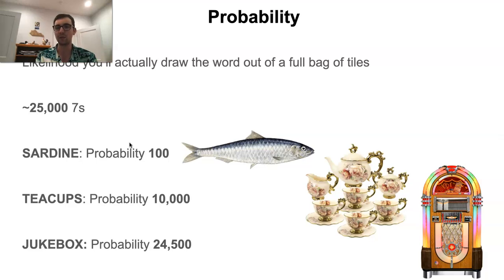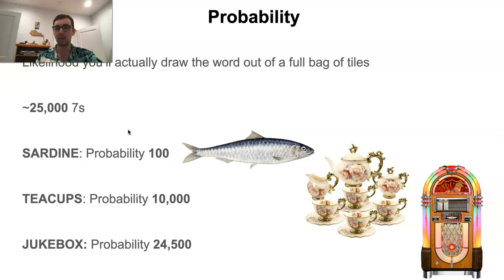I've probably played the word SARDINE — or especially if you count variants like SARDINES — dozens and dozens of times in tournaments. I don't believe I've ever played the word JUKEBOX before; maybe once, and almost certainly with a blank and not as a bingo. The probability concept really does work. The high probability words come up all the time, sometimes even the same word played many times across a division in a single tournament. The low probability words are really fun to play when you do get them, but they do not come up often.